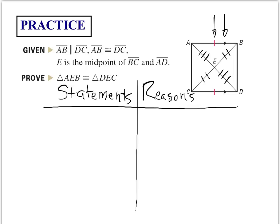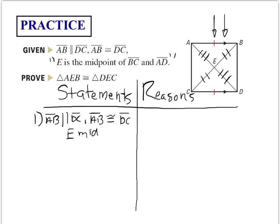With the diagram marked up, let's go to the statements. I'll write my givens: AB is parallel to DC; AB is congruent to DC; and E is the midpoint of BC and AD. No abbreviating when you're actually writing proofs — but for space I'll shorten the last one here.